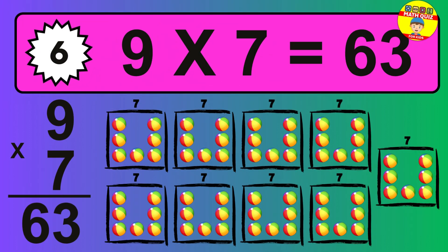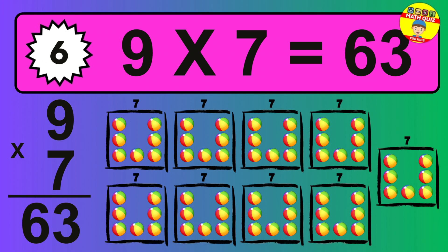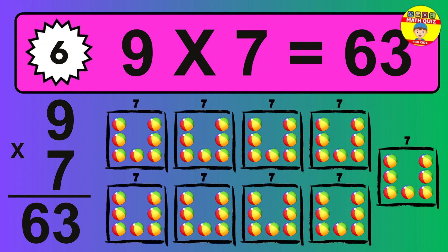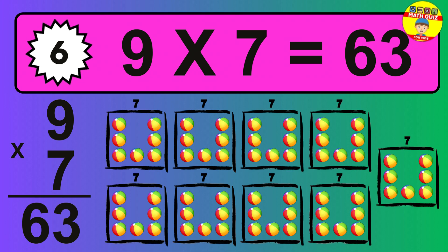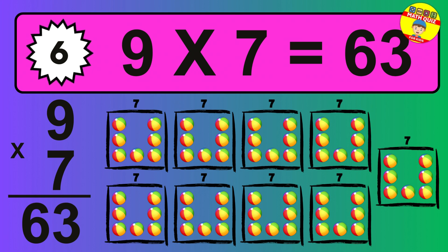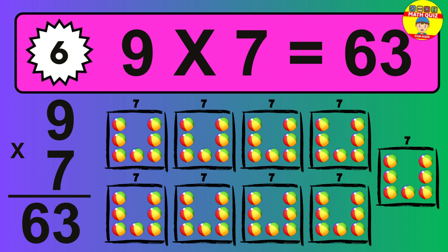The answer is nine times seven is 63. To calculate, we have nine groups with seven balls each one. So how many balls do we have? 63 balls.